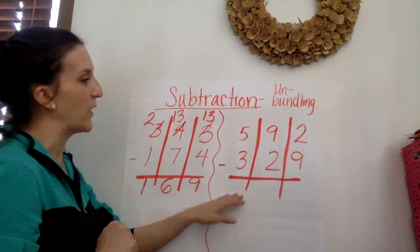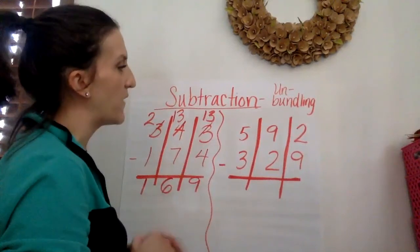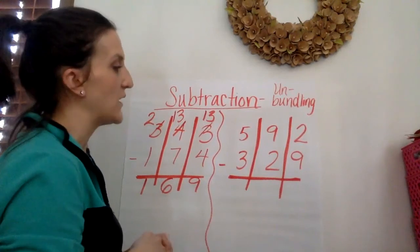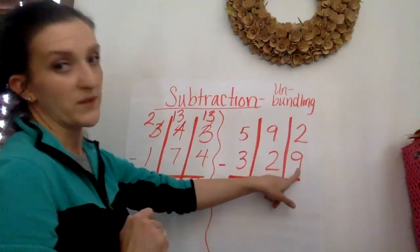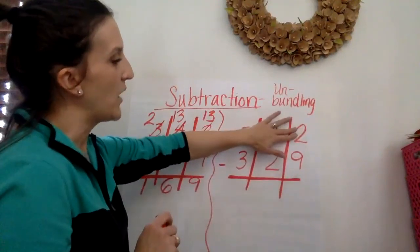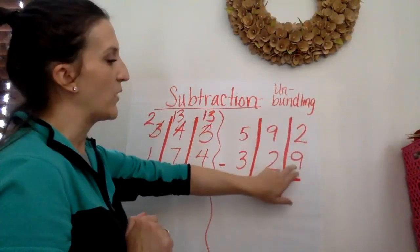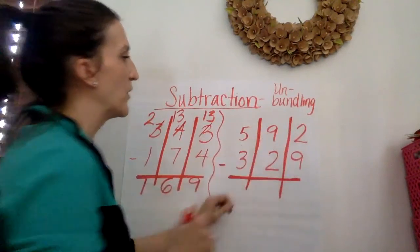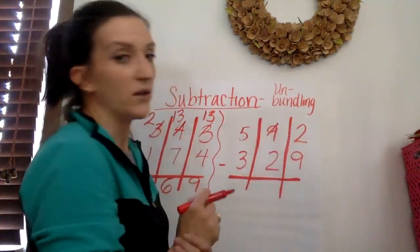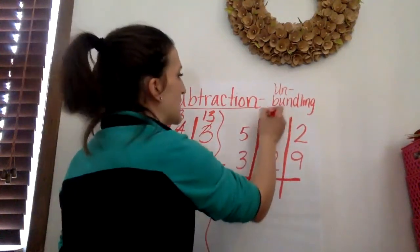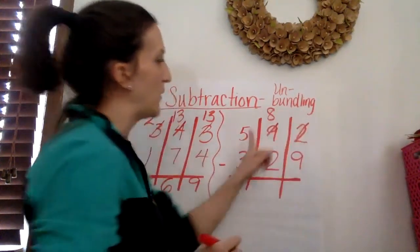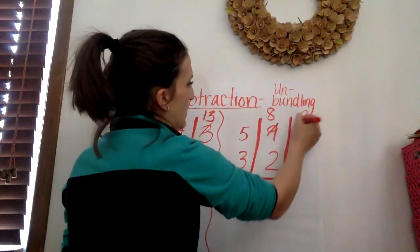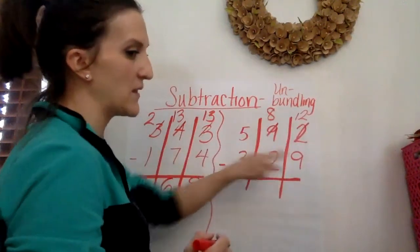Let's go ahead and try another problem. We're going to subtract 592 minus 329. So we always start in the ones place and we ask ourselves is the number on top or the number on the bottom bigger? The number on the bottom is bigger. So we have to go next door and get 10 more. So we no longer have 9. How many do we have? 8. And since we're bringing my group of 10 over to the ones place, we no longer have 2 ones. We have 12.